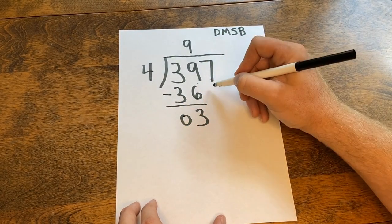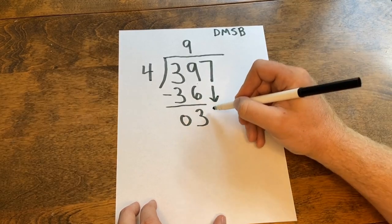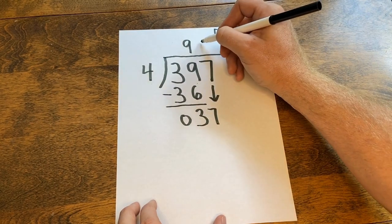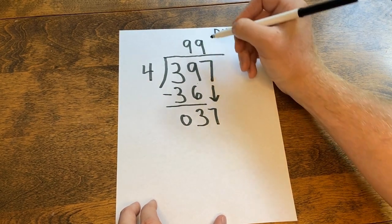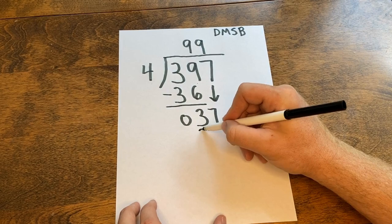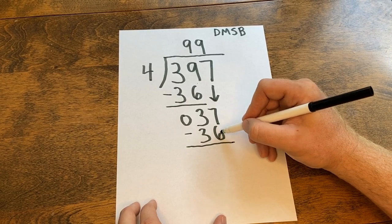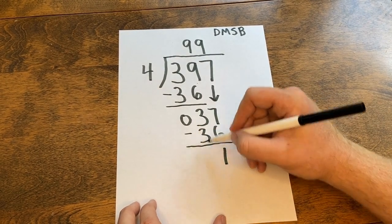And now I bring down my 7, and I start over. 4 goes into 37, 9 times. 9 times 4 is 36. I do my subtraction. 7 minus 6 is 1. 3 minus 3 is 0.